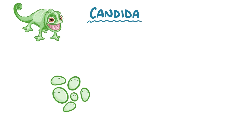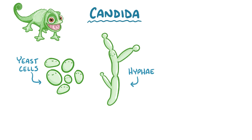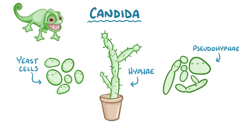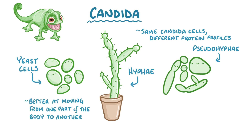Candida can exist in multiple forms — it's kind of like a chameleon. Sometimes the cells can appear round or oval, and these are called yeast cells. Other times it can appear like hyphae, where it looks like long thin filaments, kind of like a segmented cactus plant. It can also take an in-between appearance called pseudohyphae. Each of these morphologies, or looks, reflect the same Candida cells that are expressing different protein profiles, and they give the cells different properties. When the Candida is in yeast mode, it's better at moving from one part of the body to another, whereas when it's in filamentous mode, it's better at invading tissues.